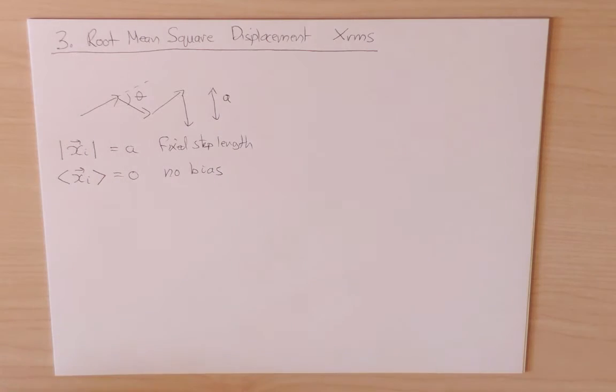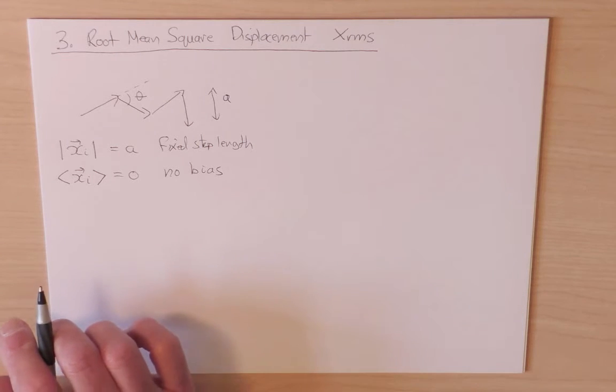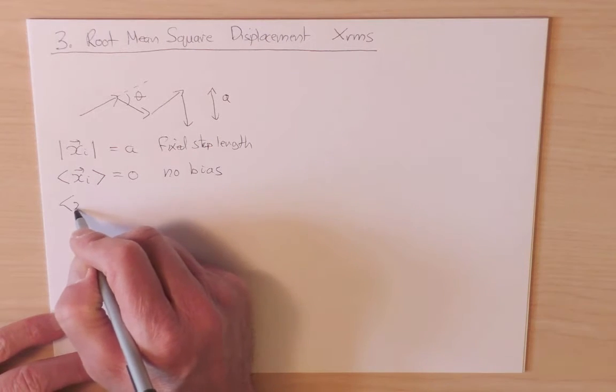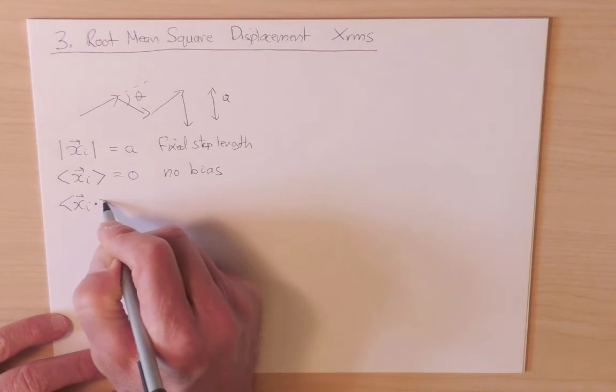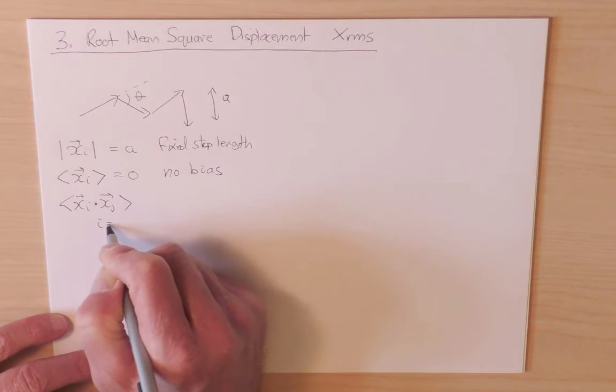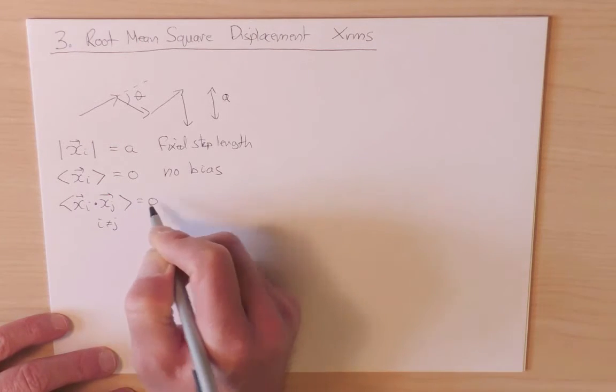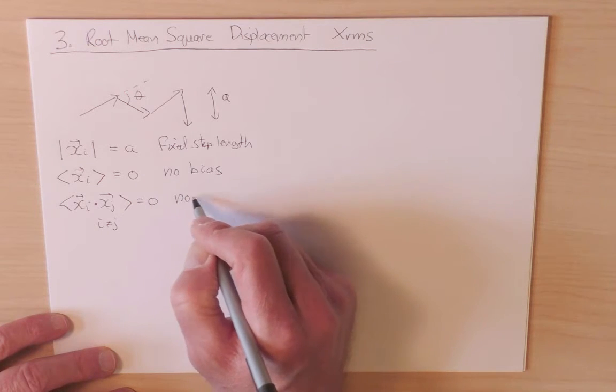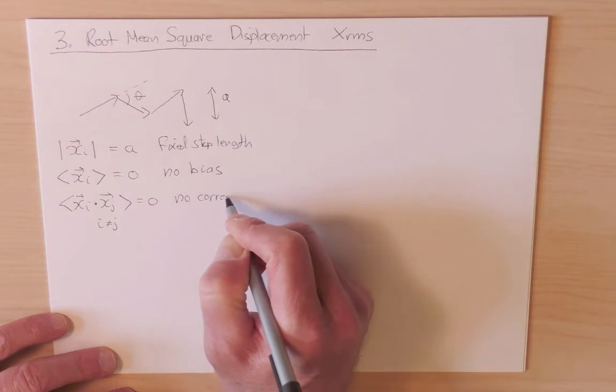And furthermore, because these steps are uncorrelated, that means that the dot product of X_i with X_j for any i not equal to j is equal to zero. So this is the mathematical statement that there's no correlation between steps, successive steps or steps further down the road.